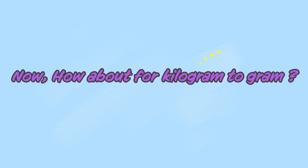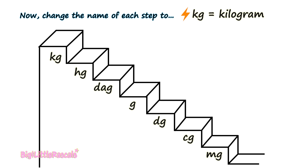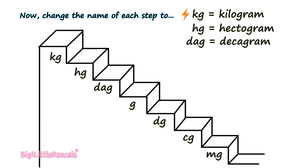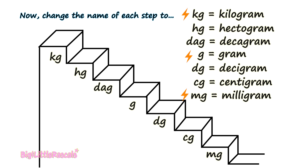Now, how about kilogram to gram, or gram to kilogram? First, let's visit back our stairs of measurement. Let's change the name of each step: KG — short form for kilogram; HG — short for hectogram; DAG — short for decagram; G for gram; DG for decigram; CG for centigram; and the last one, Mg for milligram. KG is the biggest unit of measurement, while Mg at the bottom is the smallest. The most commonly used are kilogram, gram, and milligram — I have put a flash sign in front of them.